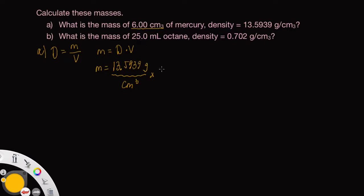Cubic centimeters is a volume. And cubic centimeters cancels here. And what we will get as a result is units of grams.